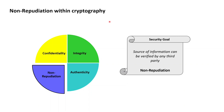Non-repudiation, the last security goal of cryptography that we in this course will have a closer look at, is the security goal demanding that in a system with non-repudiation, the source of information can be verified by any third party — not necessarily a party involved in the exchange of the information, but any third party.